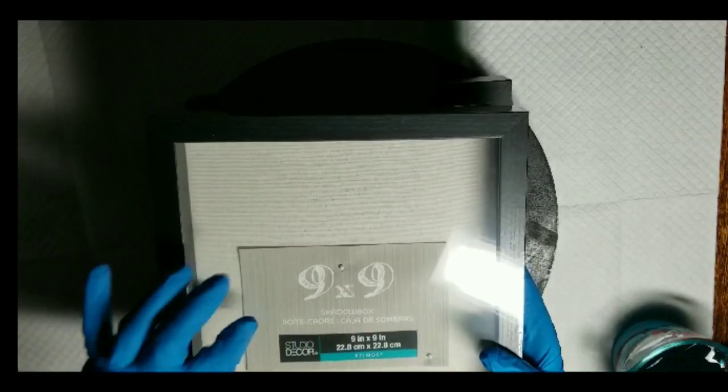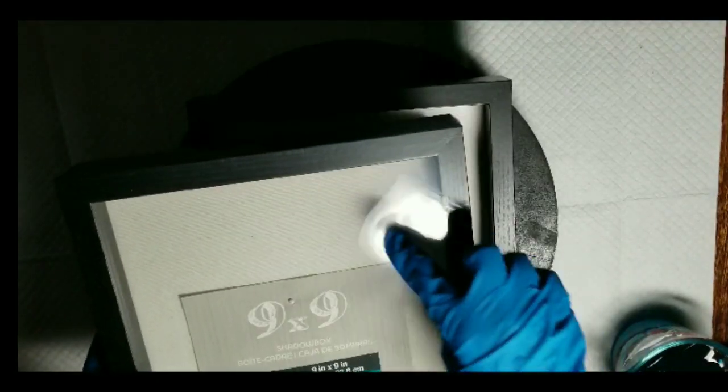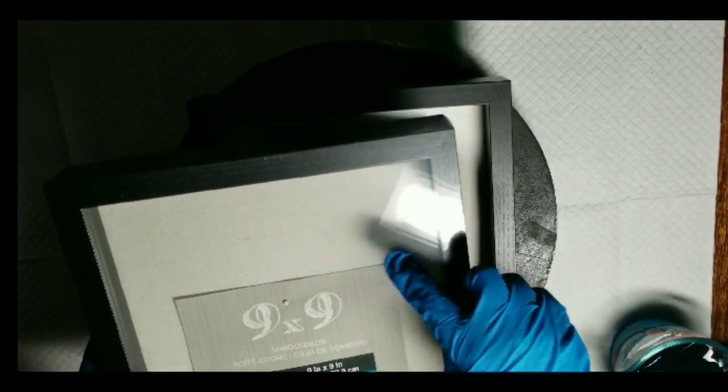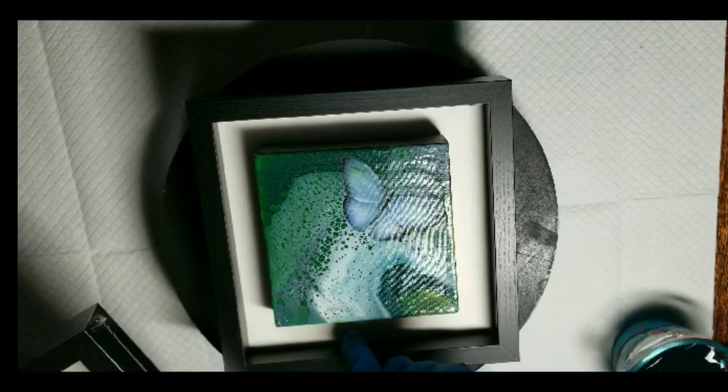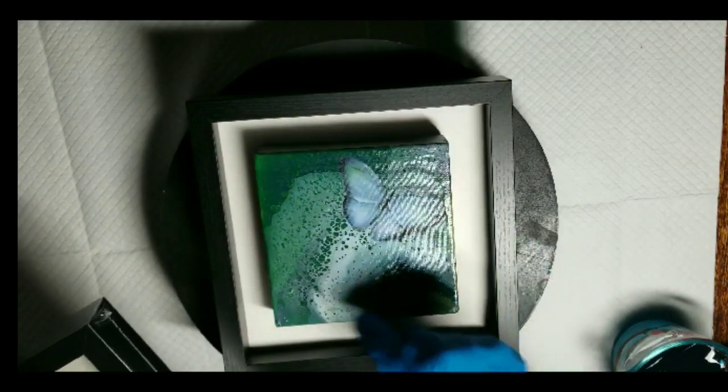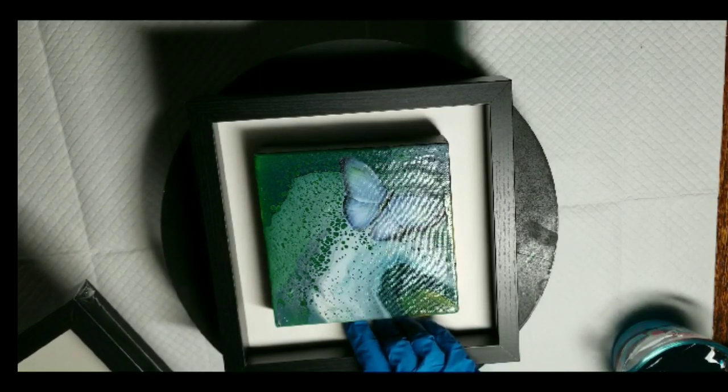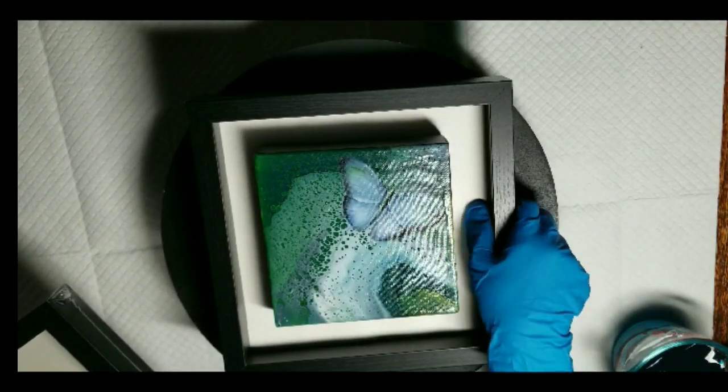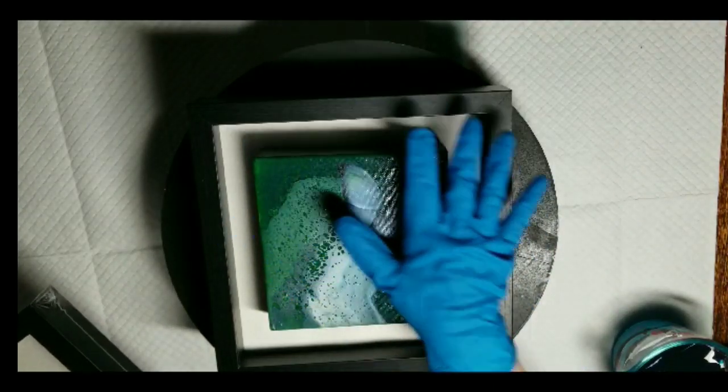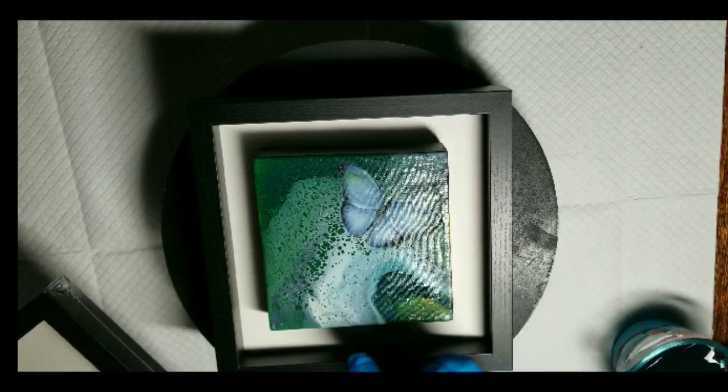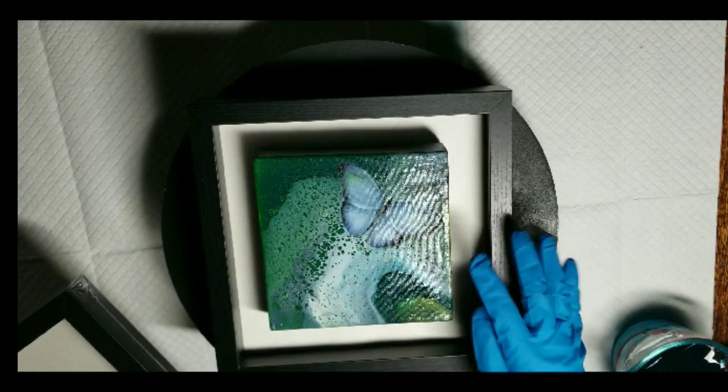I get these shadow box frames from Michaels. They come with glass, I remove the glass. The backing is a padded piece of fabric in a neutral color. I cut out a piece of poster board, either black or white depending on the pour, and put that on. Then I glue this on with super glue. You can see it goes above the edge, that's why you can't use the glass. If you use a shallow one you could keep the glass on, but I think it's kind of neat this way.